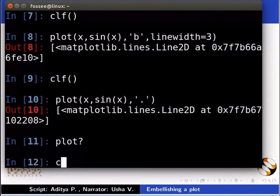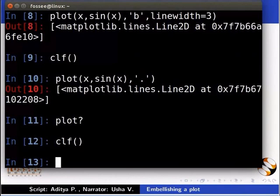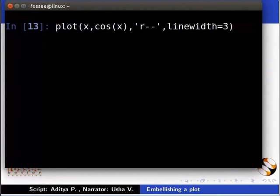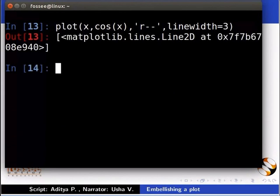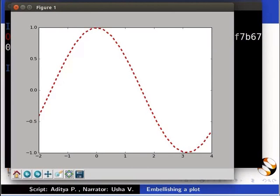Type clf to clear the plot window. Now type plot inside the brackets x comma cos x comma inside inverted commas r hyphen hyphen comma linewidth is equal to 3. We use a combination of line width argument and line style.